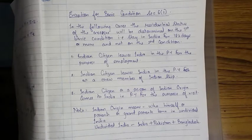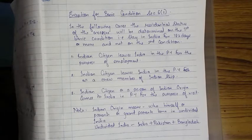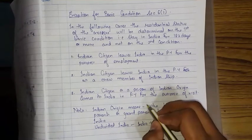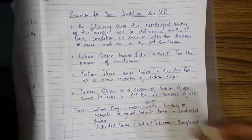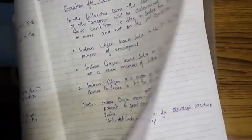These exception cases are: (1) an Indian citizen who leaves India in the previous year for the purpose of employment; (2) an Indian citizen who leaves India as a crew member of an Indian ship; (3) an Indian citizen or a person of Indian origin who comes to India in the previous year for the purpose of a visit. 'Indian origin' means a person whose self, parents, or grandparents were born in undivided India — that is, India, Pakistan, and Bangladesh.